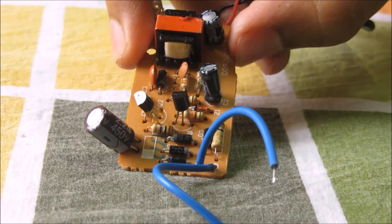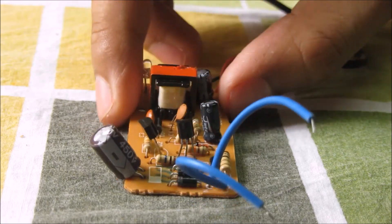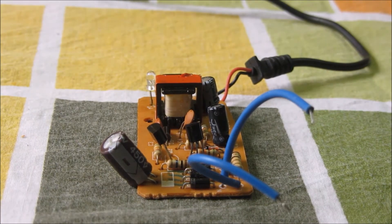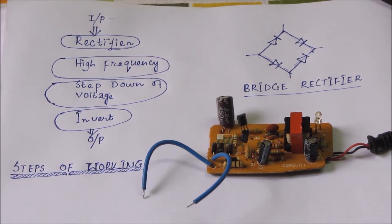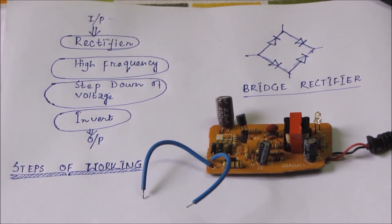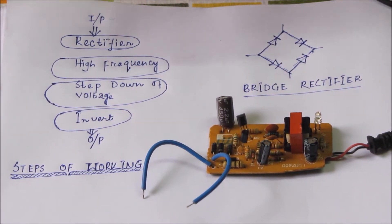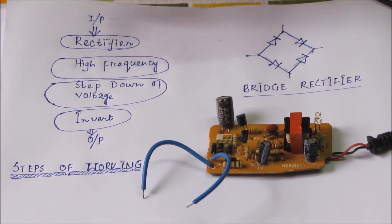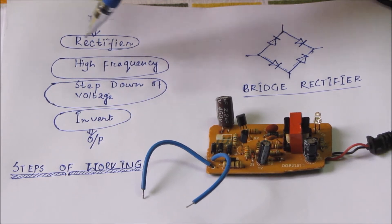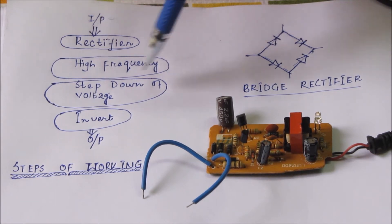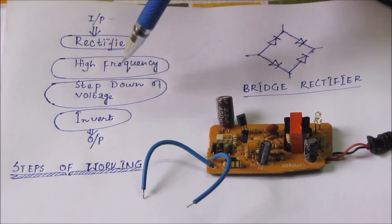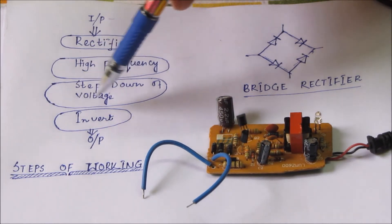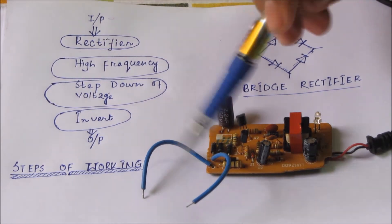These are the general diodes. Now we are going to show you the basic principle of the cell phone charger circuit. We have drawn it as blocks: input comes in, then rectification takes place, then after rectification the signal is converted into a high frequency signal, then step-down of voltage takes place.